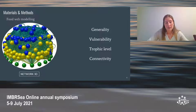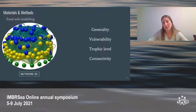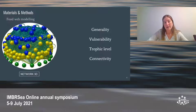Generality is the number of prey a species has. Vulnerability is the number of predators a species has. The trophic level is the position a species occupies in the food web depending on the predator-prey relationships. And connectivity is the general number of links in the food web network.